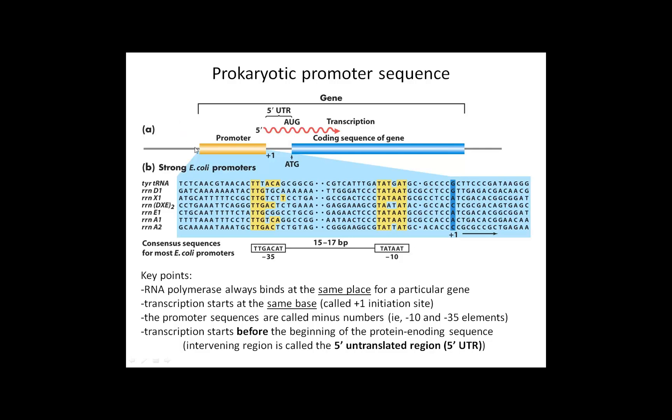One of those sequences is in the promoter region. Let's look at this diagram. For every single gene, there's a spot where transcription will start, and that's called the plus one site.